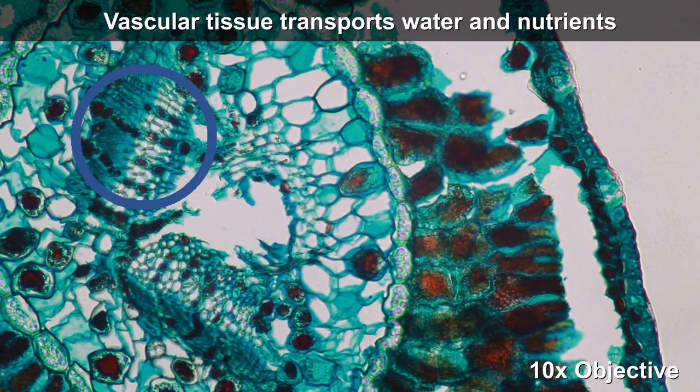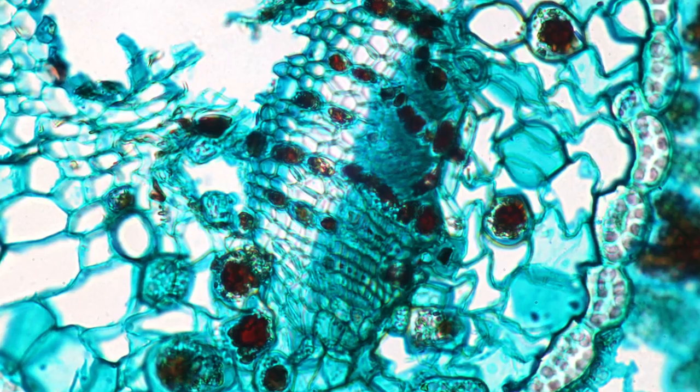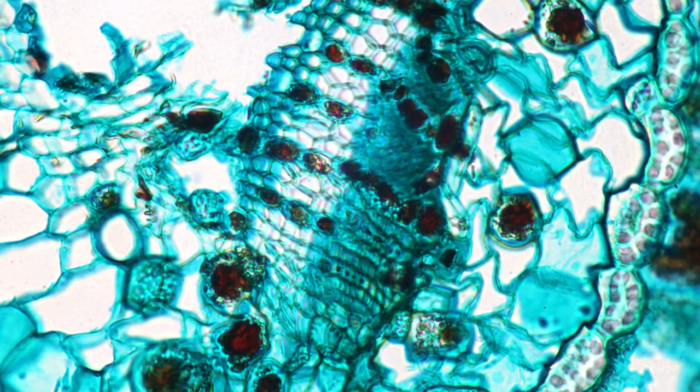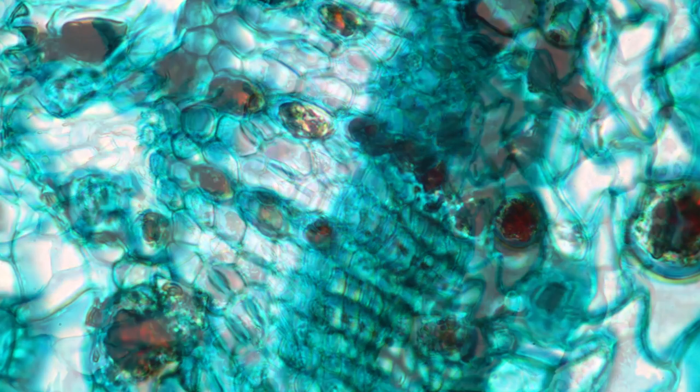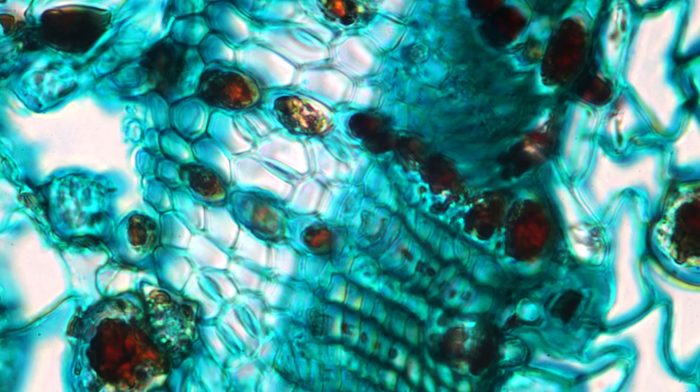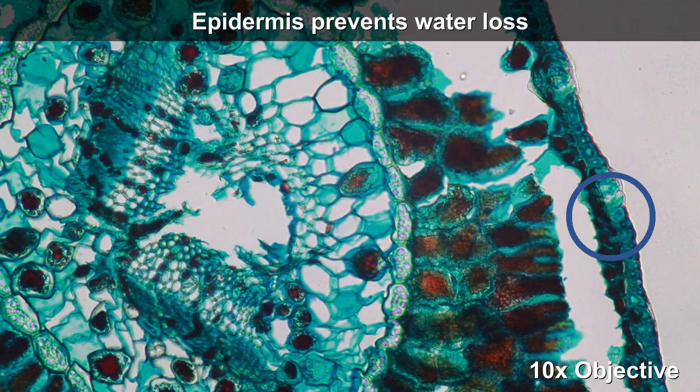It is the vascular bundle. Here we have a close-up, and this is where substances are transported to and away from the leaf. The water is transported to the leaf, and the sugar is transported down to the roots.